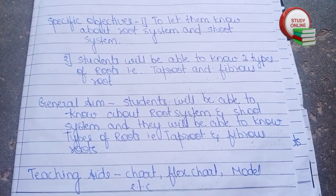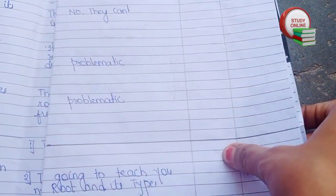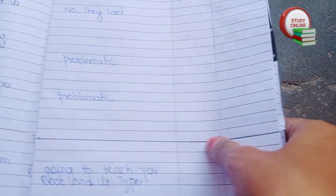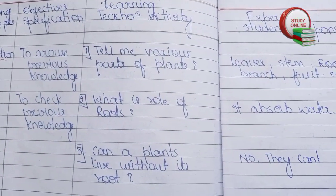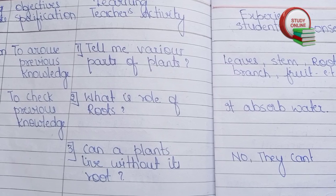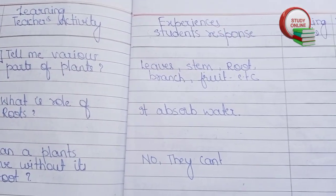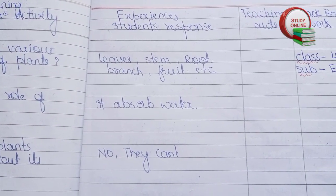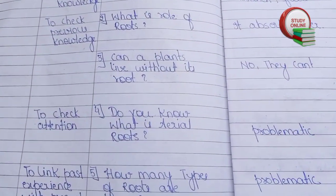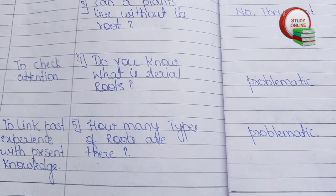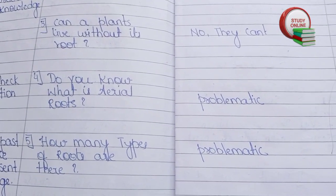We have to write all the things we generally want to teach to students. For the introduction part, we can ask a question like 'Tell me various parts of plants.' Students will answer: leaves, stem, root, branch, fruit, etc. After that, we can ask 'What is the role of roots?' and students will try to answer.